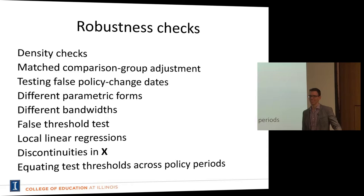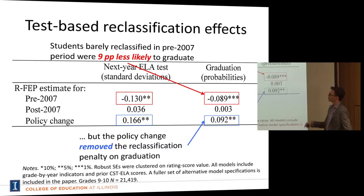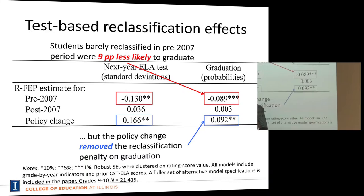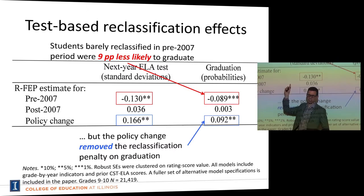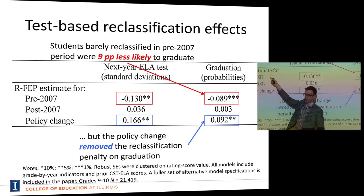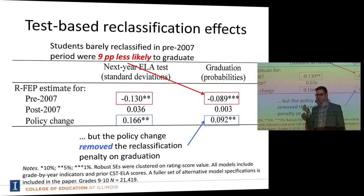A question about how to think about the recession and its impact on graduation: the pre-2007 kids getting reclassified in ninth or tenth grade would be graduating just after the recession hits, while post-2007 kids would have more time to plan. But for the recession to explain the finding, it would have to affect kids on the margin differently — which is possible but not entirely clear how that would happen.